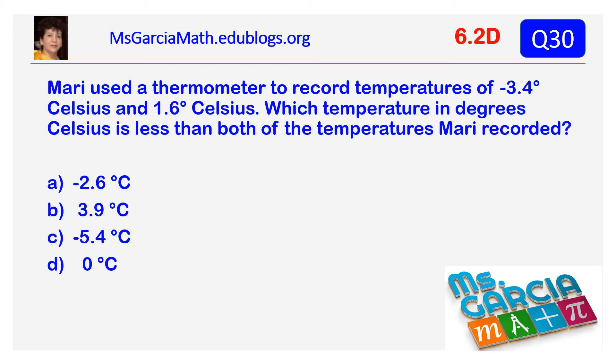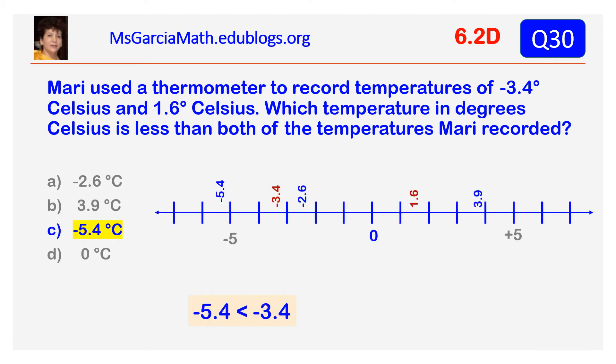Mari used a thermometer to record temperatures of minus three point four degrees Celsius and one point six degrees Celsius. Which temperature in degrees Celsius is less than both of the temperatures Mari recorded? The answer is negative five point four degrees Celsius.